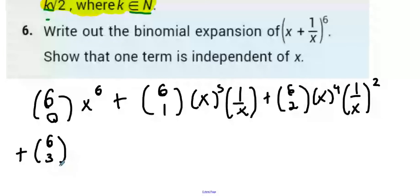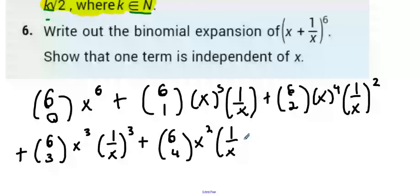63. x3. 1 over x3. That's the power of 3. Next one here is going to be 64. And it's going to be x to the power of 2. 1 over x to the power of 4.